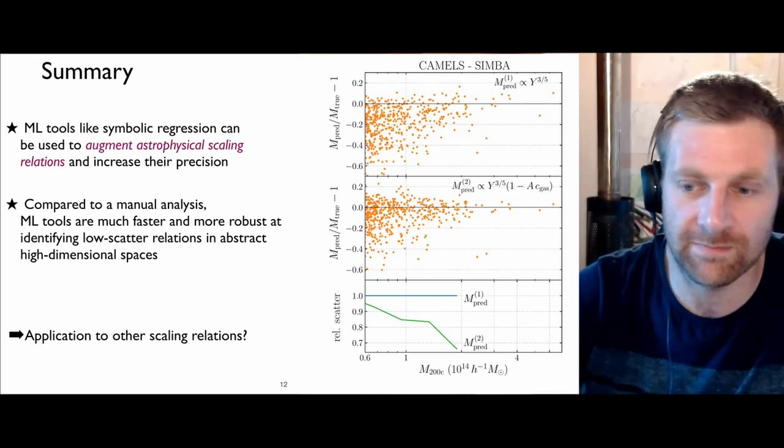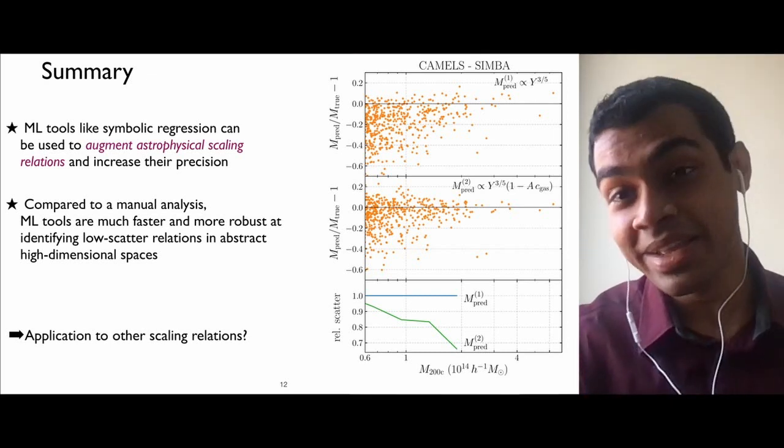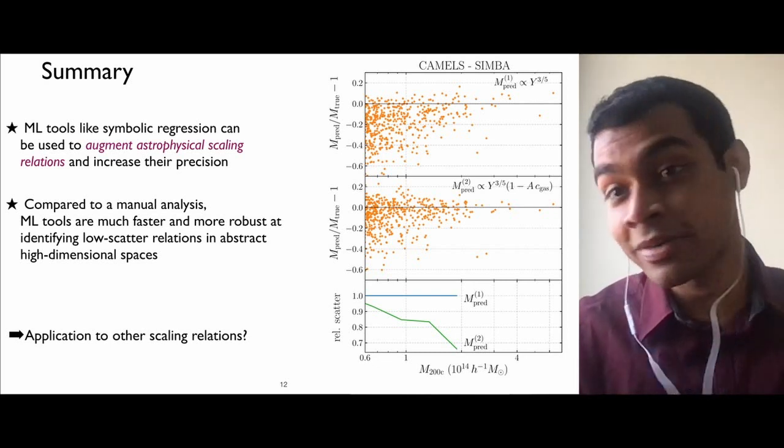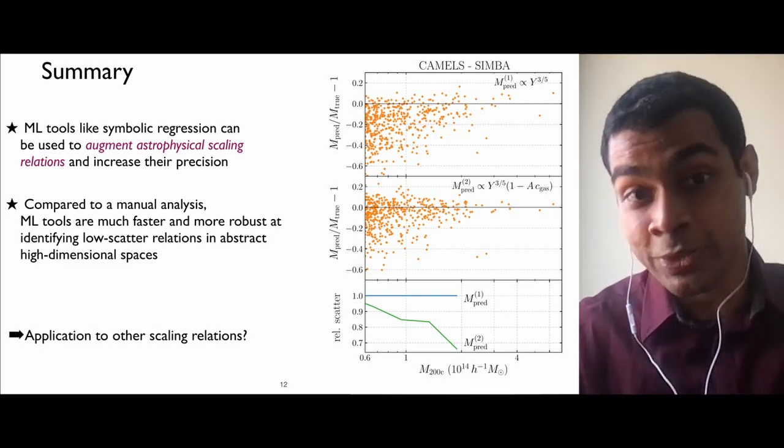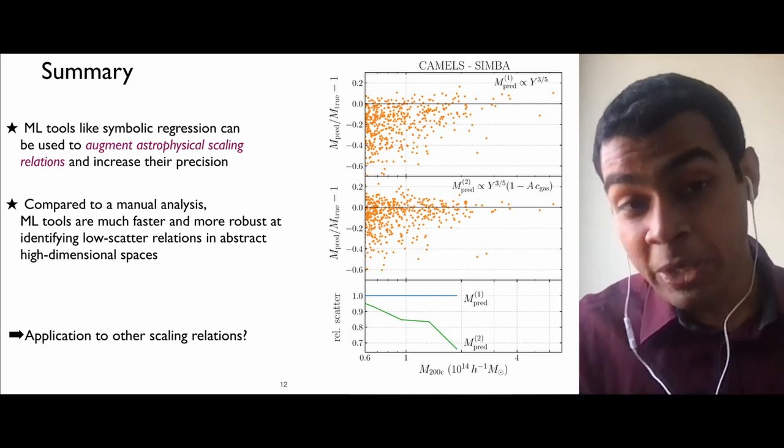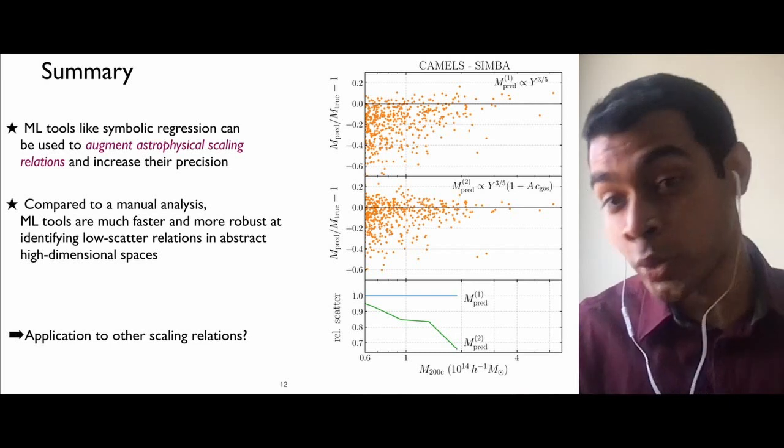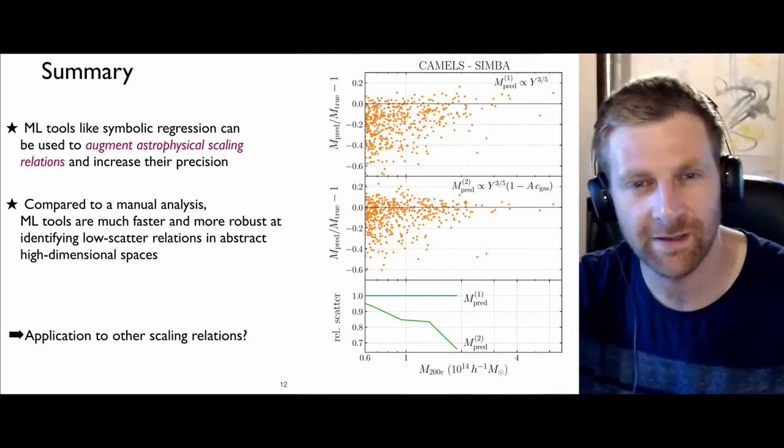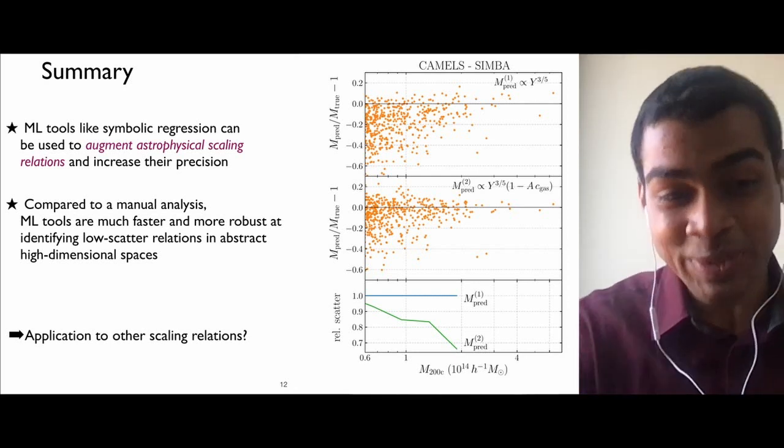So what should we take away from this work? So I think one of the takeaways is you can use machine learning tools like symbolic regression to augment astrophysical scaling relations, which are important for doing a bunch of things in cosmology for estimating masses of galaxy clusters or estimating distances to supernovae or Cepheids. You also use some scaling relations so we can maybe use machine learning tools and increase their precision. And the other takeaway I think I would want to give is compared to a manual analysis, I think machine learning tools are much faster and more robust when it comes to extracting low scatter relations in abstract high dimensional spaces. So I got distracted you talking about supernovae and thinking about the H0 tension, but I guess they only have 20 local supernovae that they can calibrate with. So it's probably not enough to do machine learning on 20 data points. Right, right.